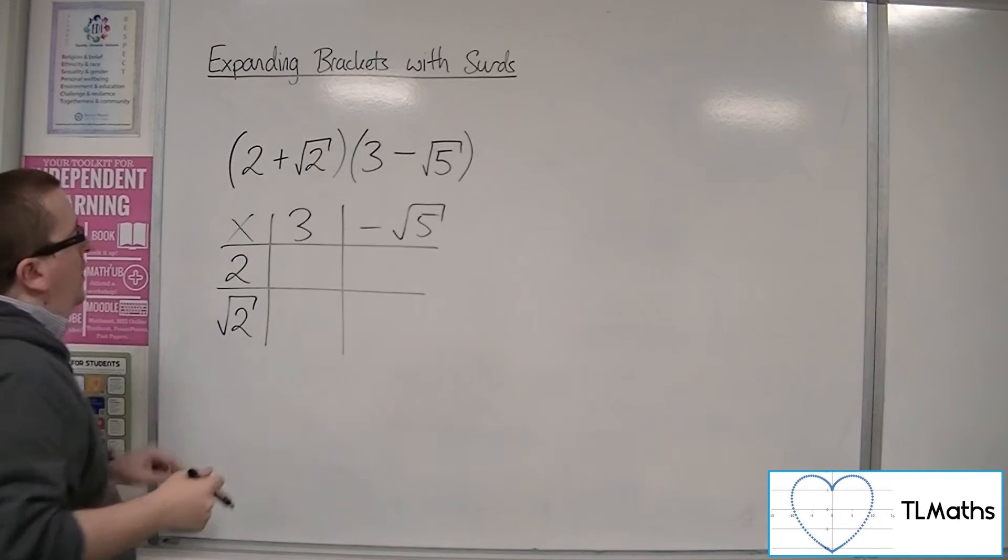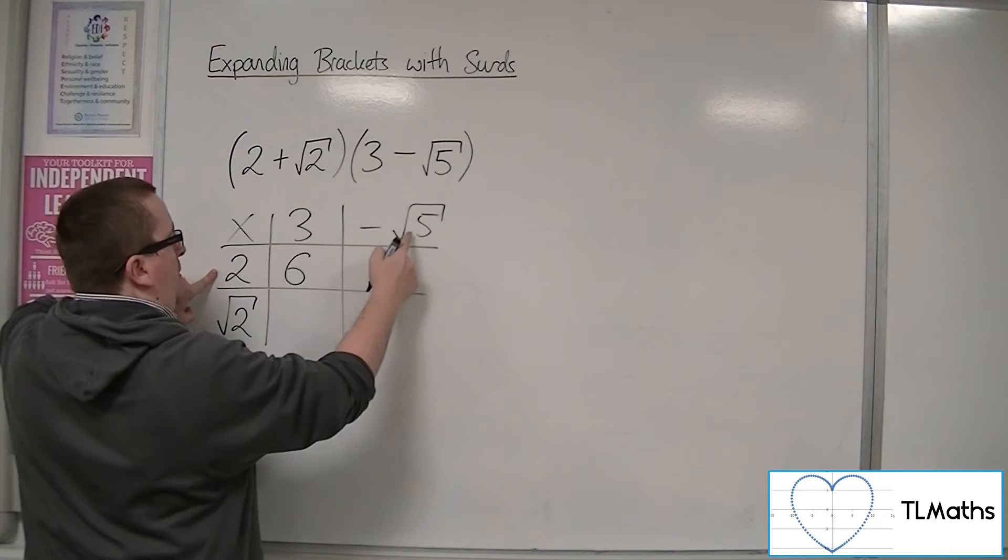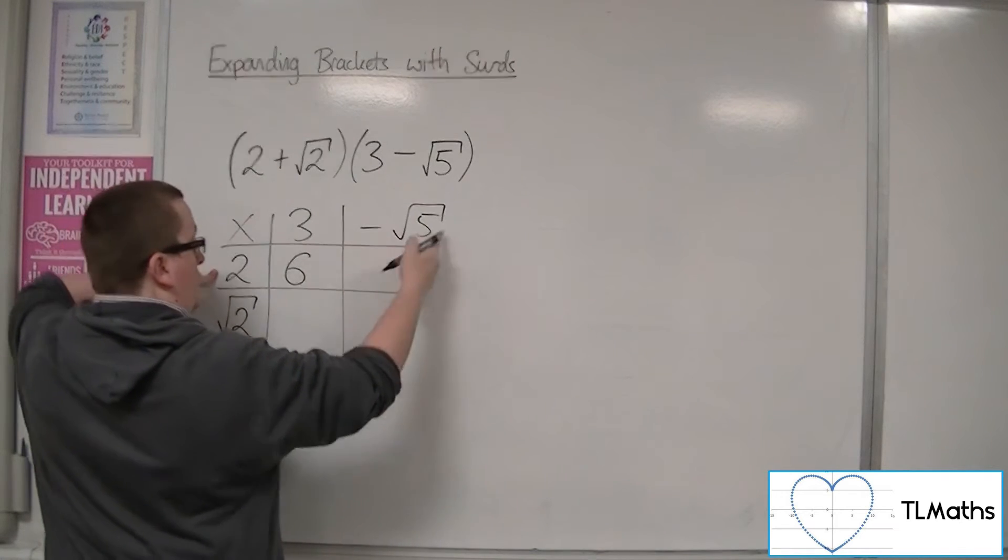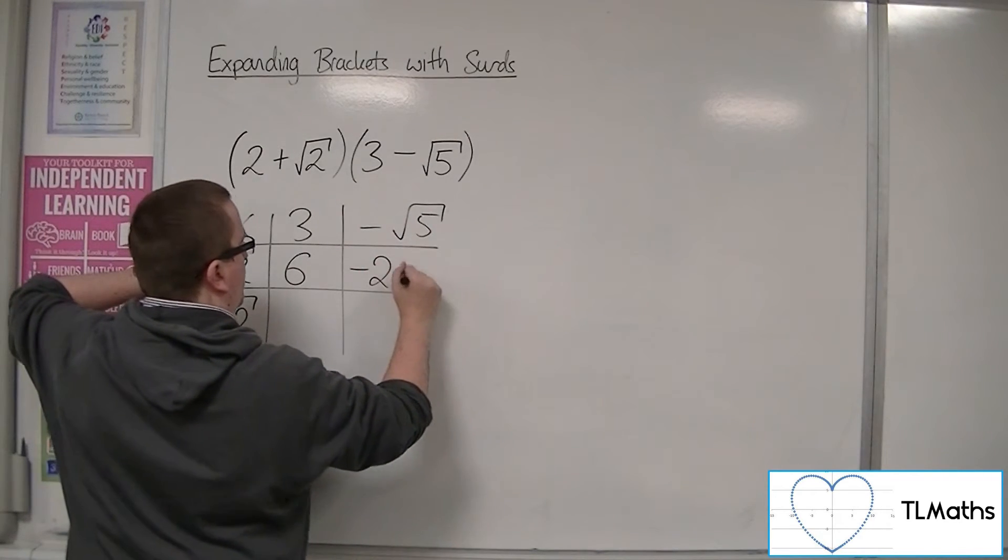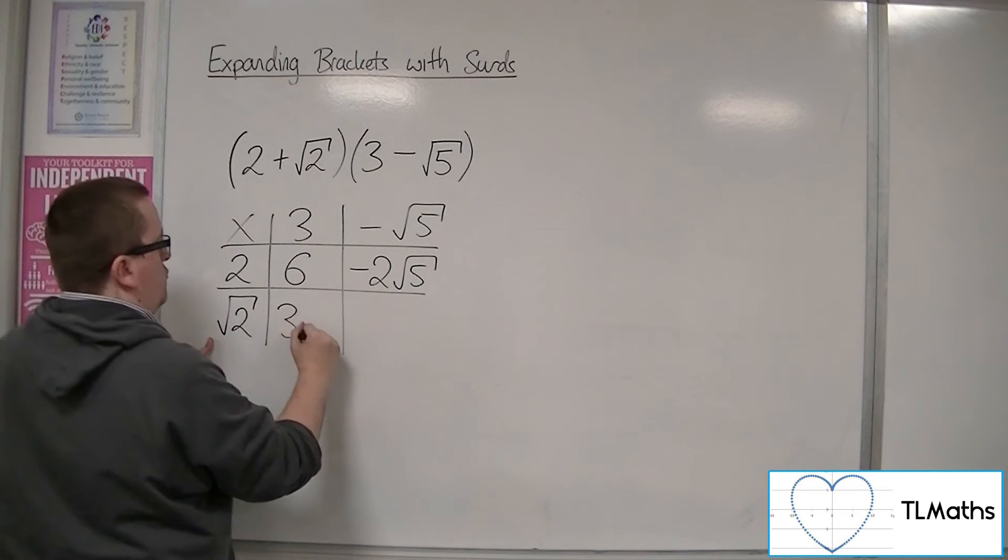So we'd have 2 times 3 is 6, 2 times minus root 5 is minus 2 root 5, and we've got root 2 times 3, so 3 root 2.